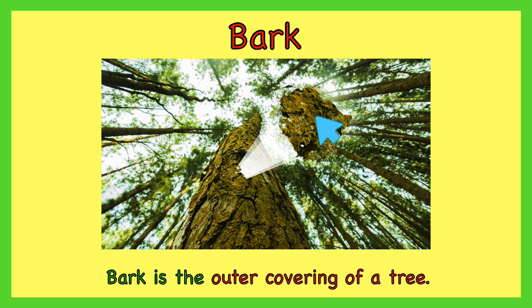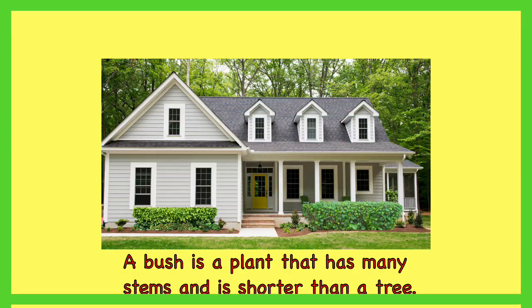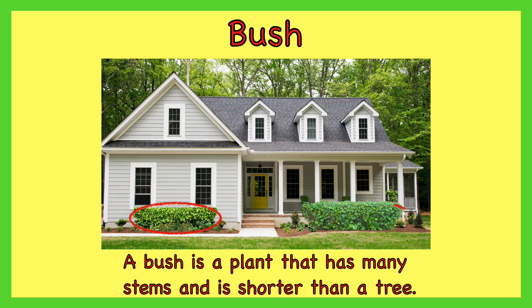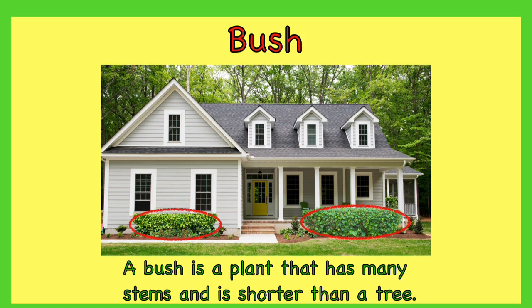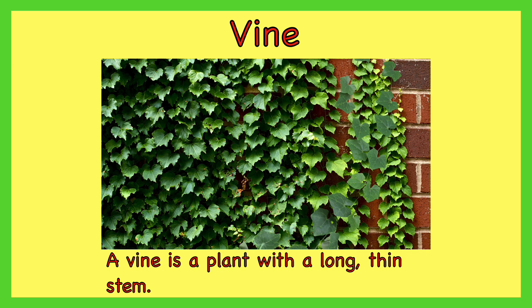Bark. Bark is the outer covering of a tree. Bush. A bush is a plant that has many stems and is shorter than a tree. Vine. A vine is a plant with a long, thin stem.